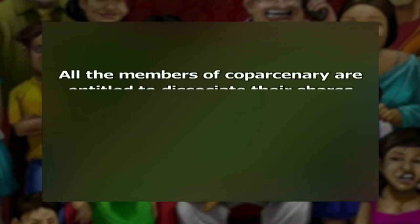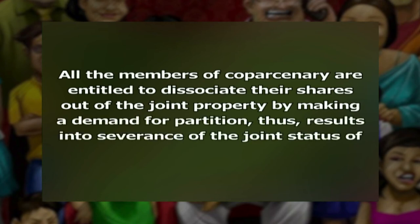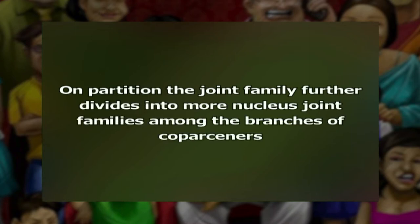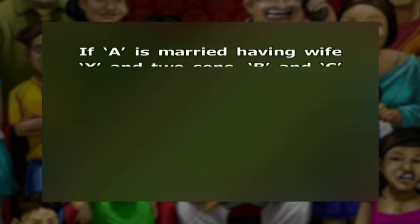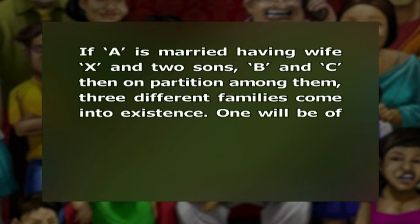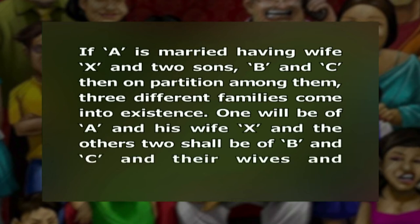All members of co-parsenery are entitled to dissociate their shares out of the joint property by making a demand for partition, which results in severance of the joint status of the Hindu family. On partition, the joint family divides into more nucleus joint families among the branches of co-parsenery. For example, if A is married, having wife X and two sons B and C, then on partition three different families come into existence — A and his wife X, and B and C with their respective wives and children, if any.